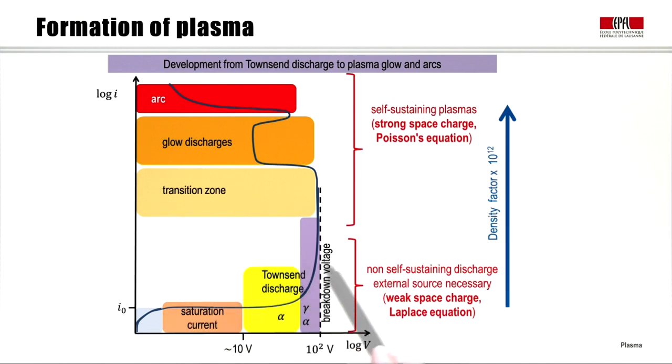In the Townsend region this is a non-self-sustaining discharge where only an external source can maintain the plasma. The plasma density is weak, the space charge is weak and we can use Laplace equation. But after breakdown the density increases by a factor of 10 to the 12 or more, and we have self-sustaining plasmas with strong space charge requiring Poisson's equation.